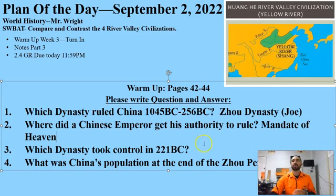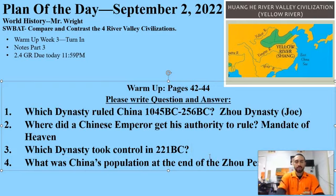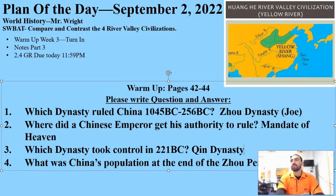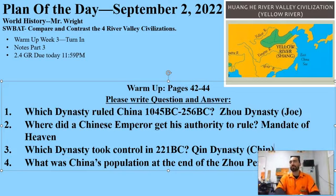Number three, which dynasty took control in 221 BC? This dynasty was the Qin dynasty. Qin, pronounced like 'chin' but spelled with a Q, is where China gets its name today. China gets its name from the Qin dynasty.